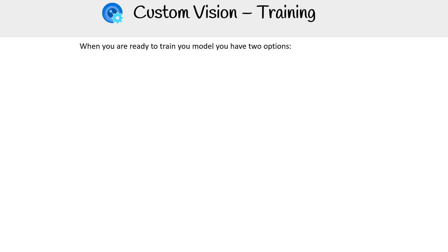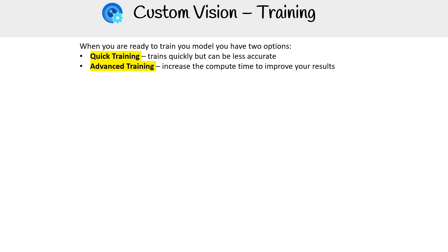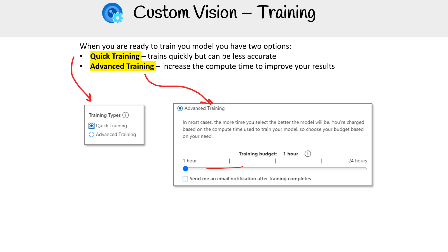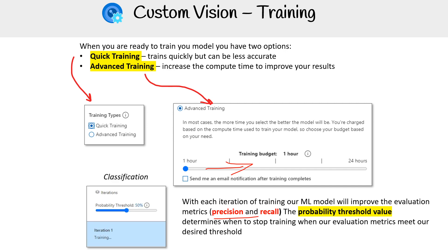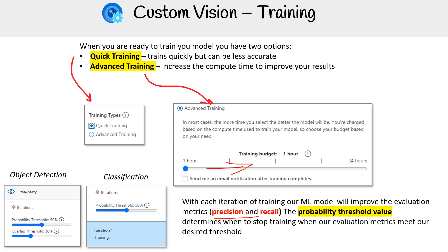When you're training your model, you have two options. You have quick training, which trains quickly but will be less accurate. You have advanced training, which increases compute time to improve your results. For advanced training, you just have this slider that you move to the right. With each iteration of training, the ML model will improve the evaluation metrics — precision and recall. The probability threshold value determines when to stop training, when our evaluation metric meets our desired threshold.